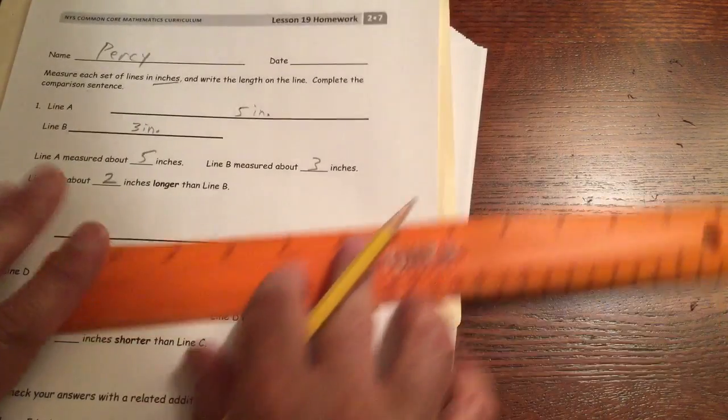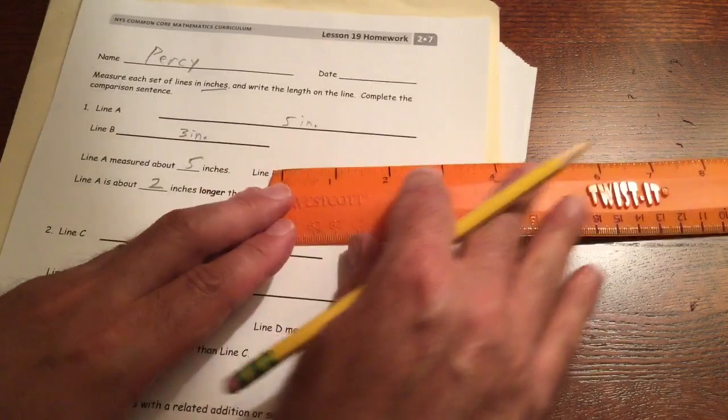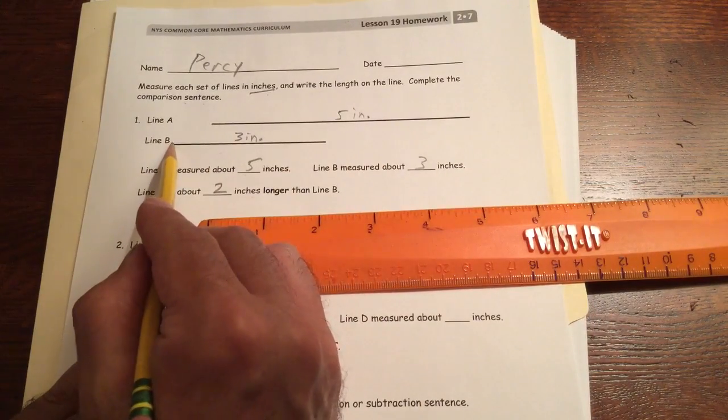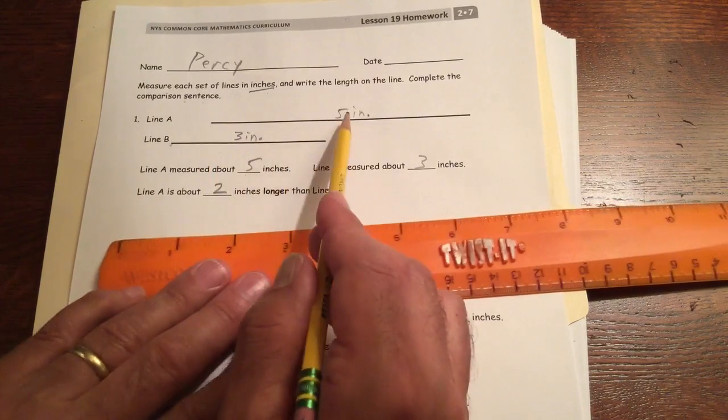Now if you measured this for length to see how much longer it was, you might have thought it was about 3 inches longer. But remember, they didn't start at the same place, so you can't really, you can't do it that way. You have to figure out 5 is 2 more than 3. That's how you do it.